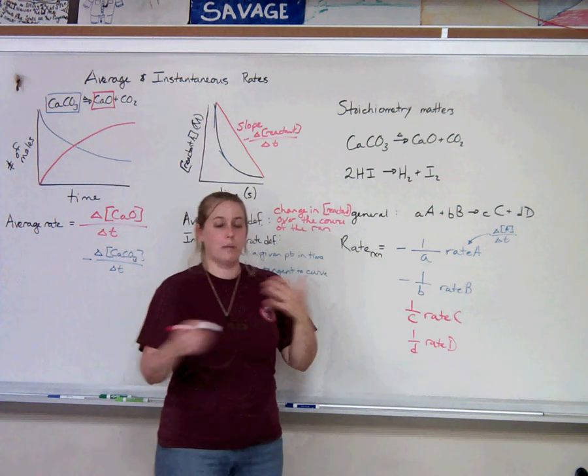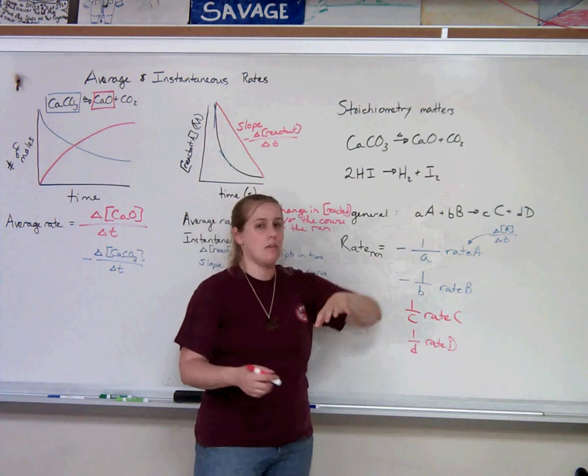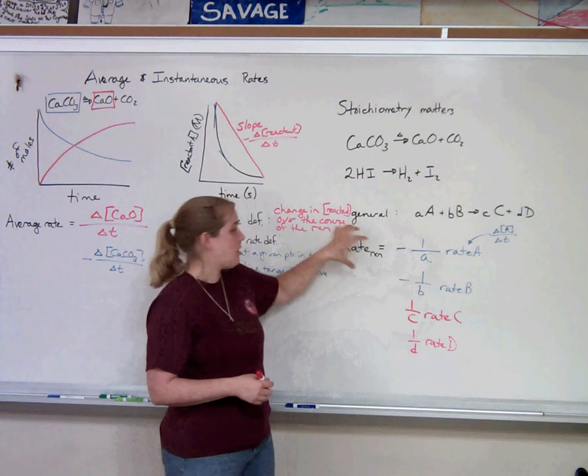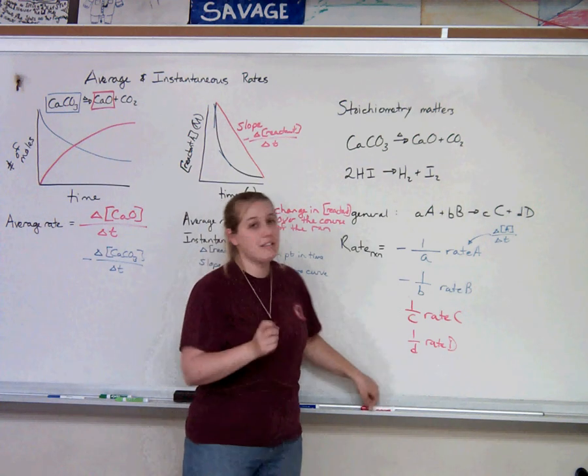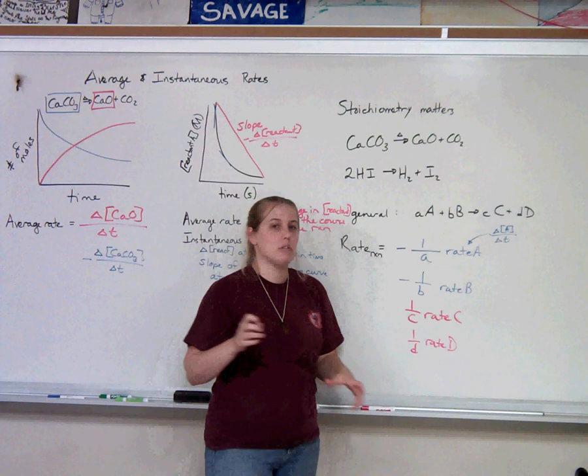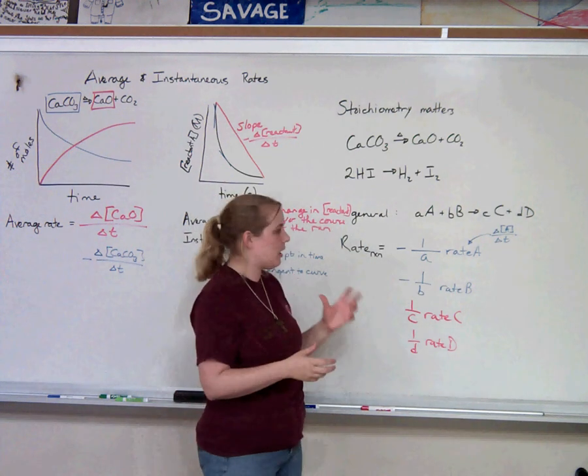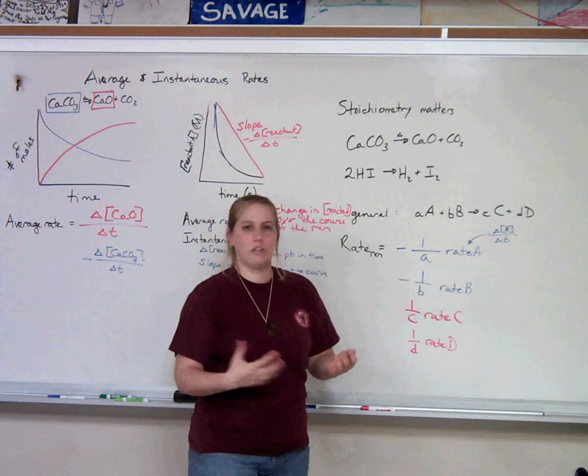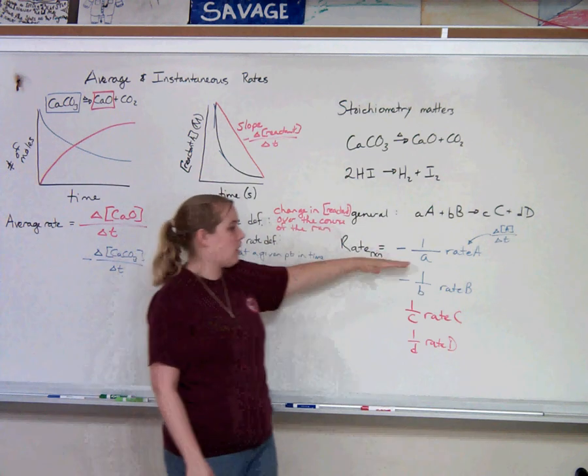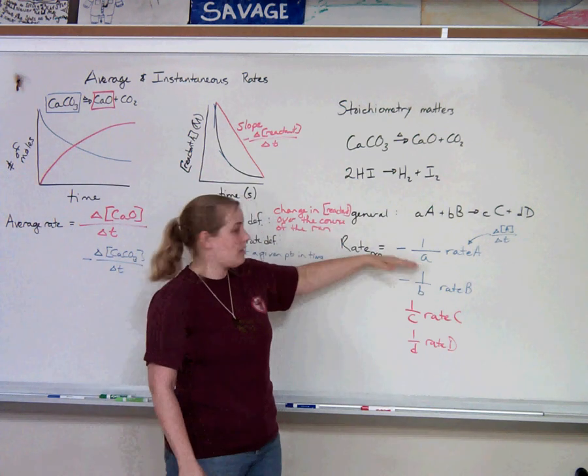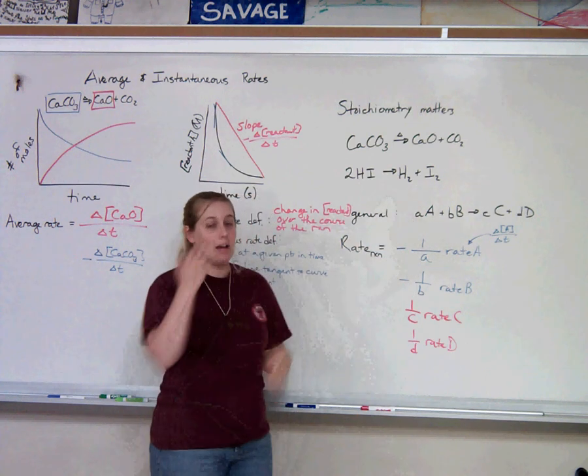So if you needed to find the rate of a reaction, and you knew the rate of one of the chemicals in the reaction, you could just use this equation to find it. This is a very simple equation. However, I'm going to warn you that because it's so simple, AP chemistry students trip up on this on the test all the time. Because they get to a question that's simple, and they say, it can't be that simple. So then they try to find a complicated way to do it. So remember the very simplest equation to find rates is just taking the reciprocal of the coefficient and multiplying it by that chemical and you get the rate of the reaction.